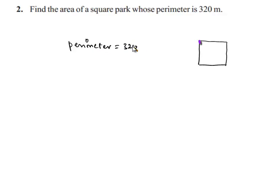We know that perimeter is the total length of the boundary, and in a square all the sides are equal. Let the side of the square be s.